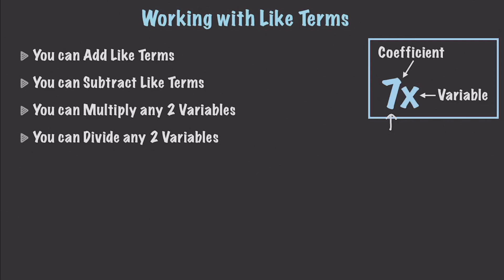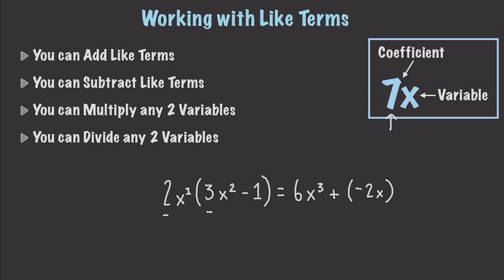Let's do a couple more. Let's go and get 2x, and let's say we have (3x² minus 1). We multiply the coefficients: 2 and 3, which works out to 6. And whenever it comes to working with the x's, remember we are going to add the exponents. This x here actually has a value of 1, so we make this x to the 1 plus 2, which gives us x³. And then plus negative 2x. That gives us our final answer.